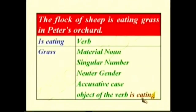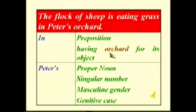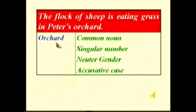What is the flock of sheep eating? The answer is grass — so grass is the object of the verb 'is eating.' 'In' — preposition, having 'orchard' for its object. 'Peter's' — proper noun, singular number, masculine gender, genitive case. 'Orchard' — common noun, singular number, neuter gender, accusative case. When each word of a sentence is separated and given its grammatical description, it is called parsing — parsing of the sentence.